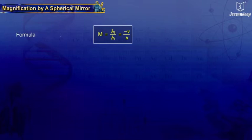To find out the height of the image, we use the formula: M is equal to H2 upon H1 equal to minus V upon U.